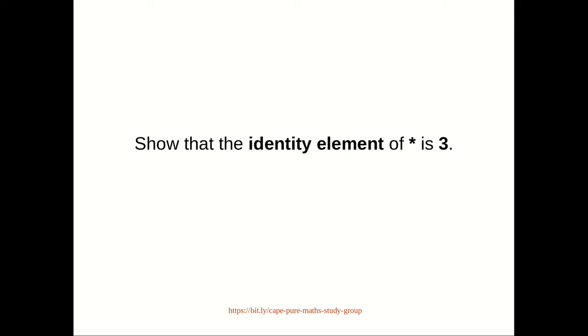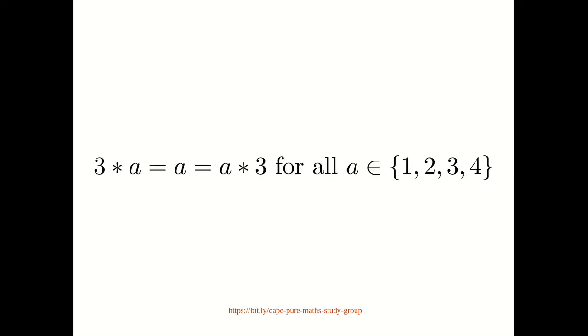So now in the second part, we need to show that 3 is the identity element of star. To show that 3 is the identity element of star, we have to show that 3 star a is equal to a, which is equal to a star 3 for all a in the set {1, 2, 3, 4}. That is, we have to show that multiplying any one of the numbers by 3 leaves the number unchanged.